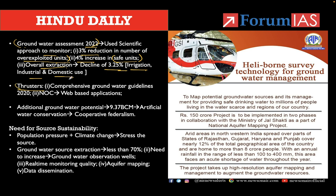The thrusters behind this success are: the comprehensive groundwater guidelines issued in 2020, and the NOC process for industries is now through web-based applications, ensuring transparency. The report also quoted that additional groundwater potential of 9.37 billion cubic meters has been created through artificial water conservation — a best example of cooperative federalism, with both state government and central government working to create a win-win situation.